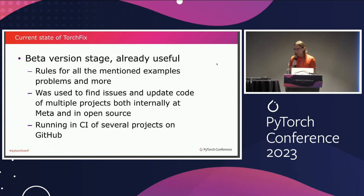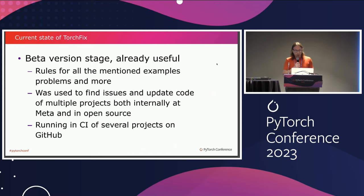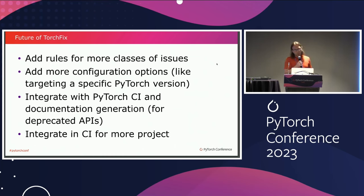As for the current stage, I'd say it's an early beta, but it's already useful. TorchFix already has rules to find and fix all the examples I mentioned and much more. It has been used to find issues and update code in multiple projects internally at Meta and also in open source. It has also been running in CI on several Meta open source projects on GitHub on every commit. Future work will add more rules for more classes of issues, guided by actual issues found in real codebases.